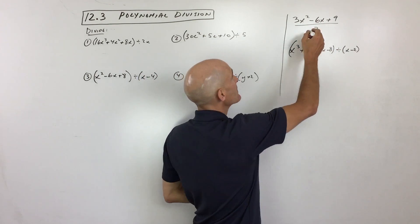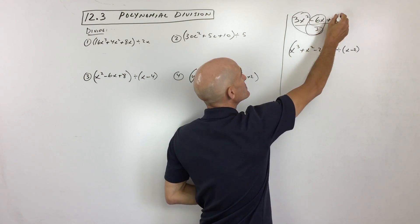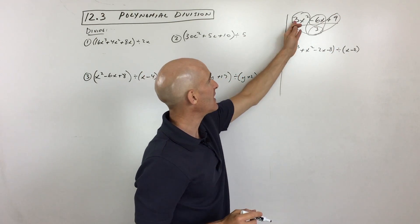So what you can do in a situation like this is you can actually break this up. Think of this as each one of these terms in the numerator is being divided by three. So you see how I did that? I divided each of them by three.